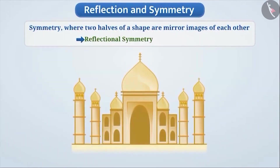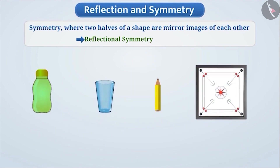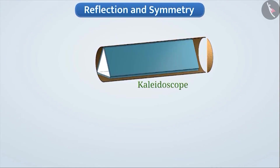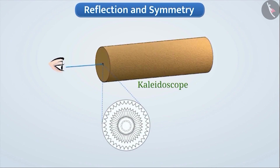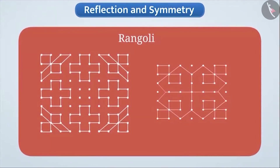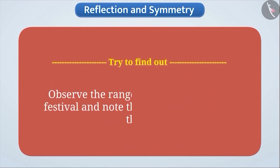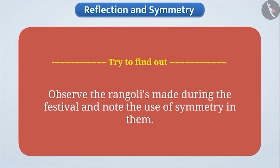The Taj Mahal is a famous example of architecture in which we see the use of reflection symmetry. Symmetry is also seen in items or objects used in our daily life — it makes the object look attractive. A kaleidoscope is an instrument made using three or more mirrors in which a variety of attractive patterns can be seen. Many reflections are formed by mirrors that have several lines of symmetry. A rangoli is a suitable example of symmetry — while making rangolis, unknowingly, reflective symmetry is used. Observe the rangolis made during festivals and note the use of symmetry in them.